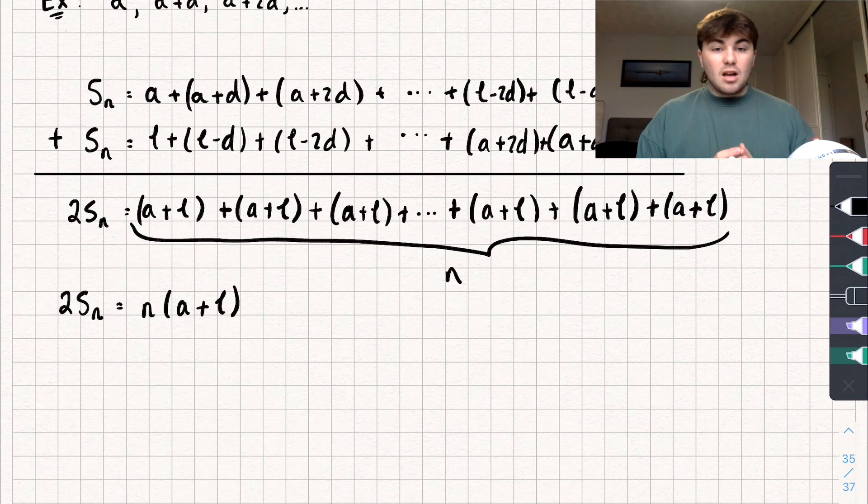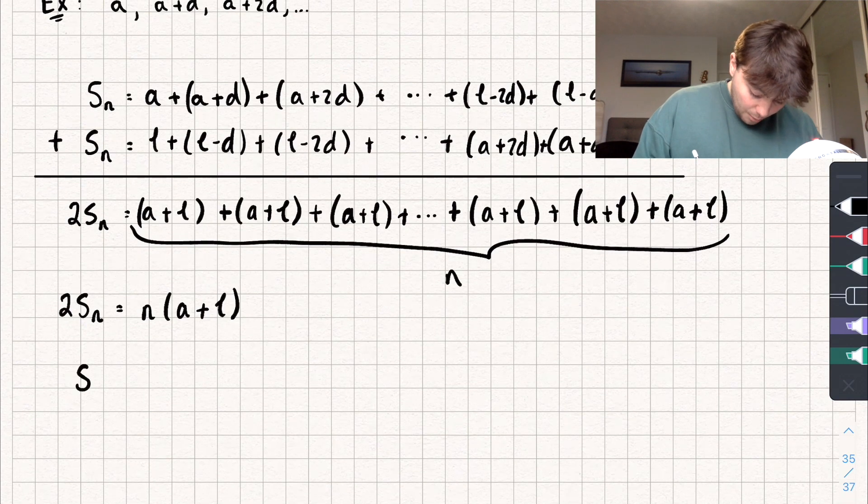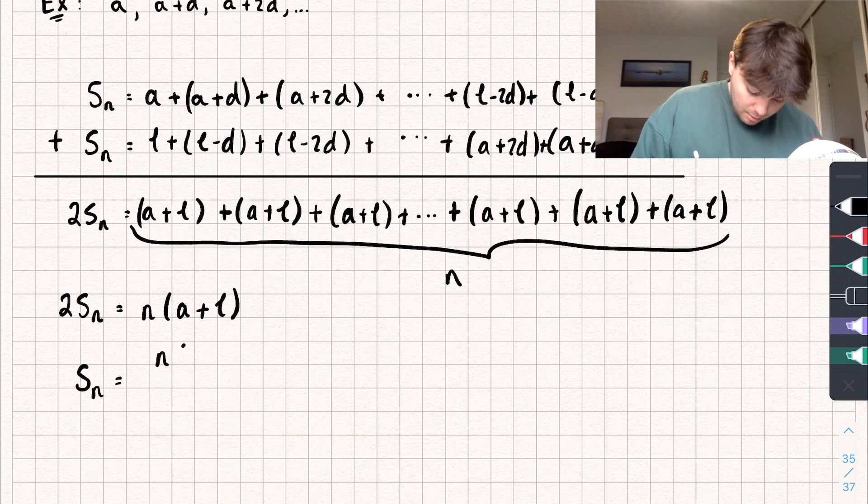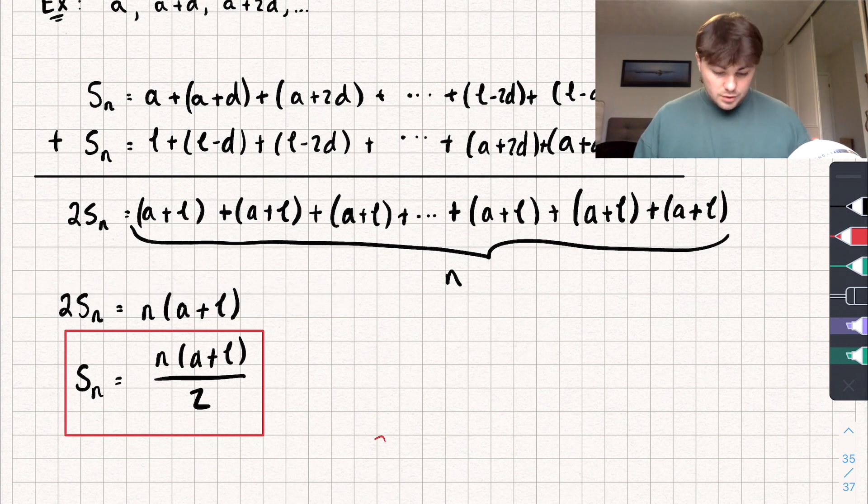And now to get the sum of all of it, just to get S_N, we can divide both sides by 2. And we get that the sum up to the Nth term of our arithmetic progression is N multiplied by the first term plus the last term divided by 2. And this is a formula that we can use for the sum of the series. So that's quite useful, and I don't think it's too difficult to get to.